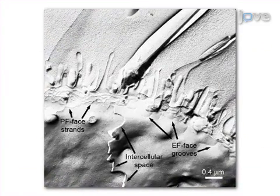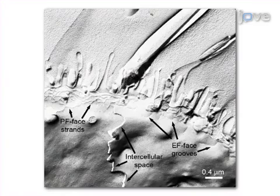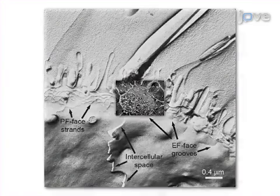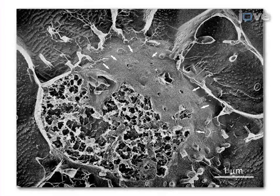Ultimately, freeze fracture freeze etch is used to show three-dimensional structural detail of cell membranes, molecular arrays and nanomaterials upon examination by transmission electron microscopy. The main advantage of this technique over existing methods, like examination of ultra-thin sections, is that objects of interest can be viewed in three dimensions at electron microscopic resolution. This method can help answer key questions in cell and molecular biology and nanotechnology, such as the dimensional and structural characteristics of cell membranes and the organization of molecular and nanomaterial arrays.